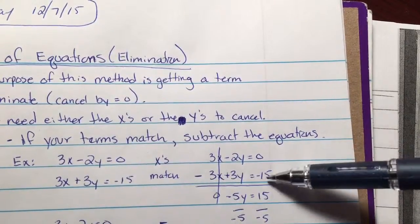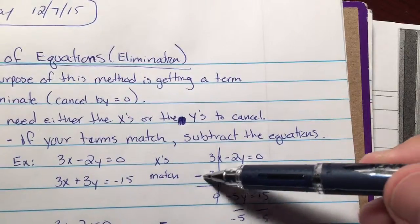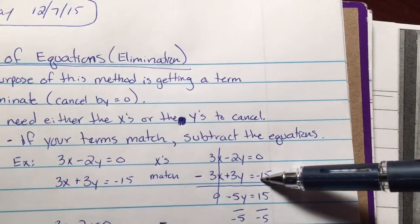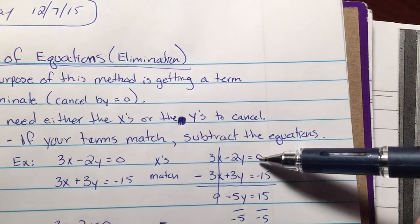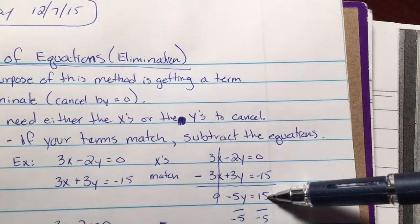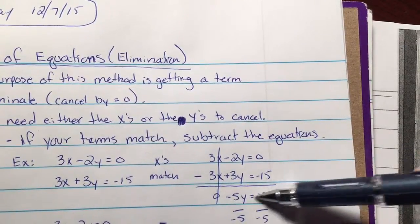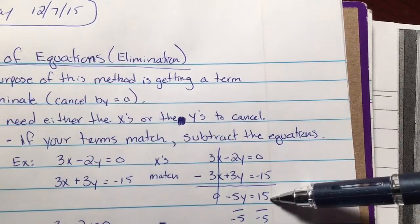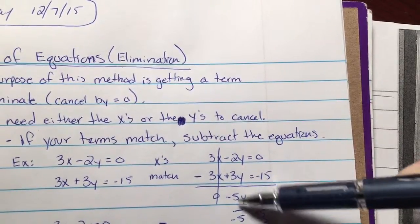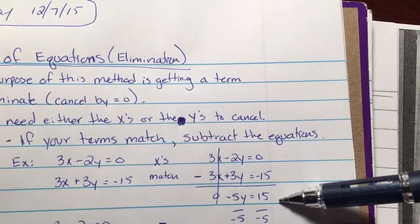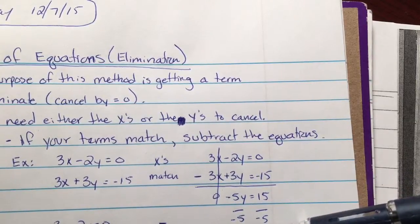Zero minus negative 15. There's that little double negative situation, so that's like saying zero plus 15. So zero plus 15 makes 15, and then you have this new equation right here. It's a one-stepper. Go ahead and divide by the negative 5. You're going to end up getting y equals negative 3.